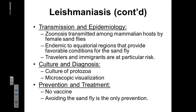This disease is a zoonosis, so it's going to be transmitted from a wild animal reservoir to a human host. It will go primarily through female sand flies. It's endemic to equatorial regions and typically needs conditions that are favorable for that sand fly vector. Individuals traveling to regions of the world that have these sand flies are at particular risk of developing leishmaniasis.